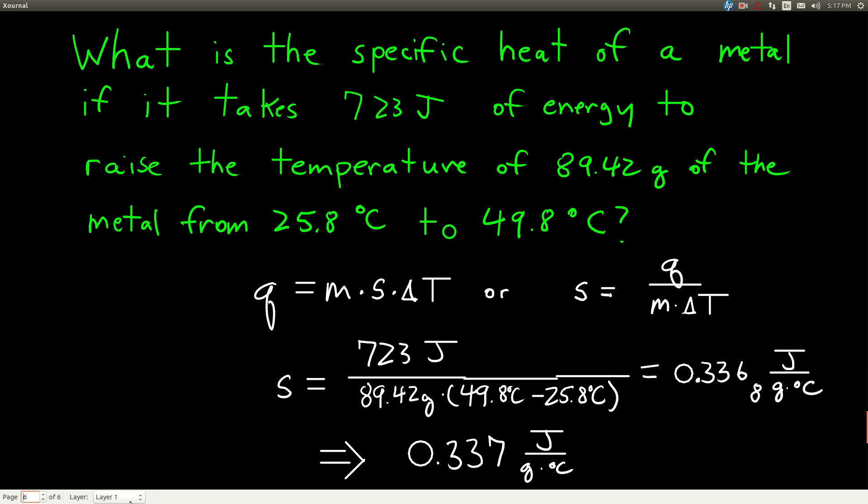Let's do another example. We see that we can calculate the specific heat of a substance if we know Q, if we know m, and we know delta T. It takes this many joules of energy - the energy is Q - to raise the temperature of this many grams, so this is m, the mass, of some metal from this temperature to this temperature. That means this is our final temperature, 49.8 degrees Celsius, and this is our initial temperature, 25.8 degrees Celsius.